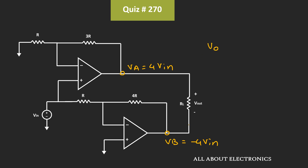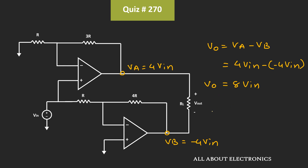The output voltage Vout is equal to Va minus Vb, which is 4Vin minus (minus 4Vin), that is equal to 8 times input voltage. From this we can say that the gain of this op-amp circuit, that is Vout divided by Vin, is equal to 8.